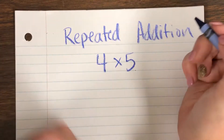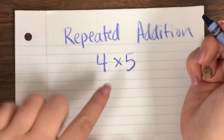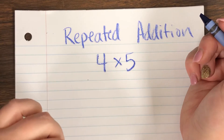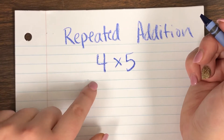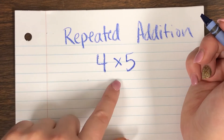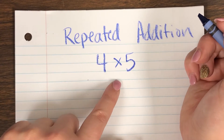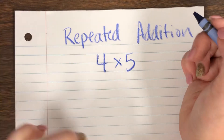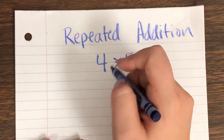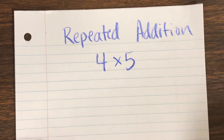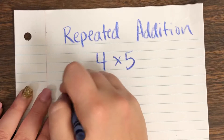So if I have four times five, I'm not going to try to just figure out the repeated addition because I don't know if I need to do four or five times, or five four times. So this is what you're going to do — you're going to do your groups. The first number says groups of, so we're going to do four groups of five.